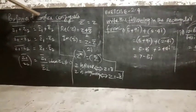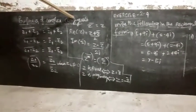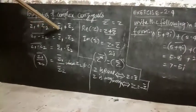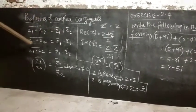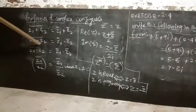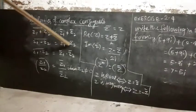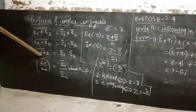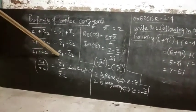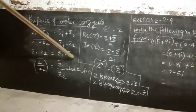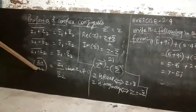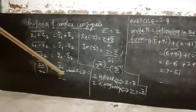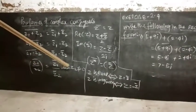Next topic: properties of complex conjugates. First, z1 plus z2 whole bar equals z1 bar plus z2 bar. Second, z1 minus z2 whole bar equals z1 bar minus z2 bar. Third, z1 dot z2 whole bar equals z1 bar dot z2 bar. Fourth, z1 by z2 whole bar equals z1 bar by z2 bar, where z2 is not equal to 0.